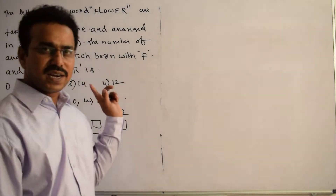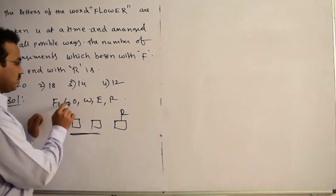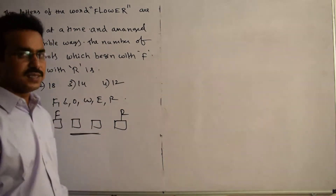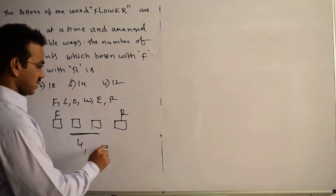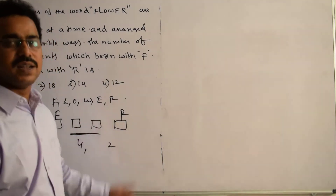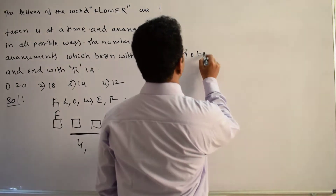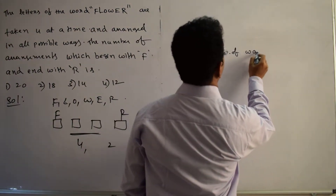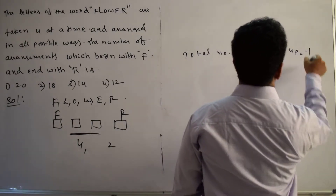For these 2 remaining boxes, how many letters are available? There are 6 letters in total, and we have already used 2 letters (F and R), so 4 letters remain. We require 2 more letters, so the number of ways we can arrange them in the 2 boxes is 4P2. Therefore, the total number of ways equals 1 × 4P2 × 1, which is 4P2 ways.